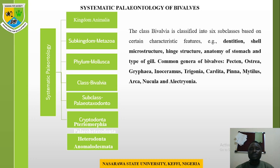Common genera of bivalves are Pecten, Ostrea, Gryphaea, Inoceramus, Trigonia, Cardita, Pinna, Mytilus, Arca, Nucula, and Exogyra.